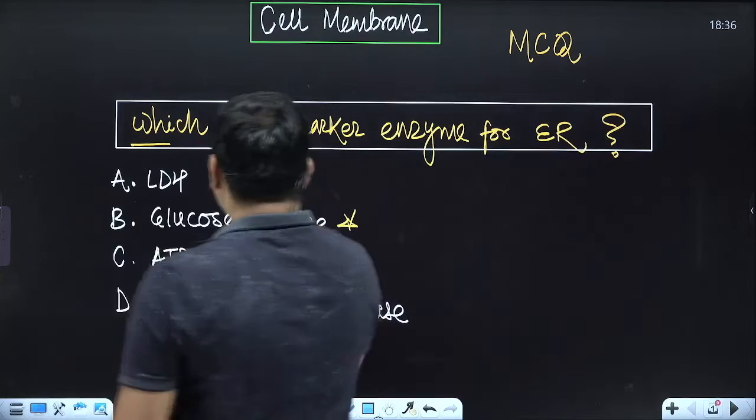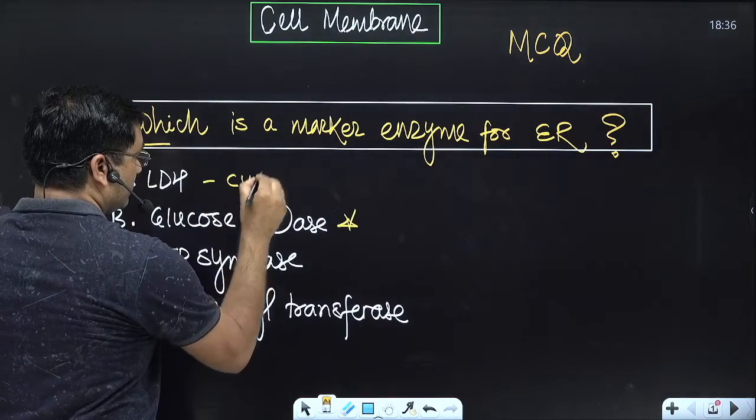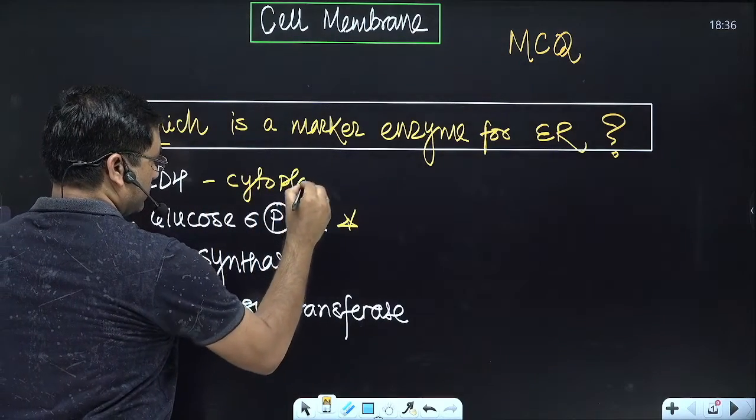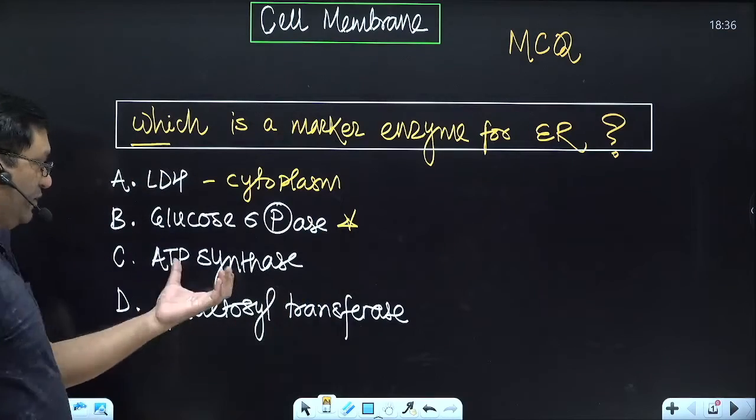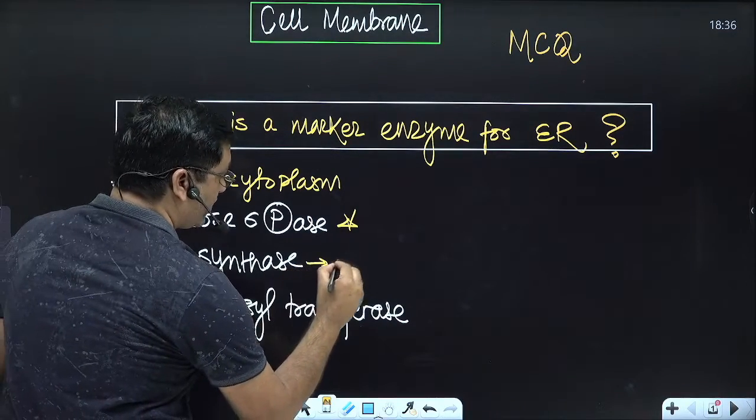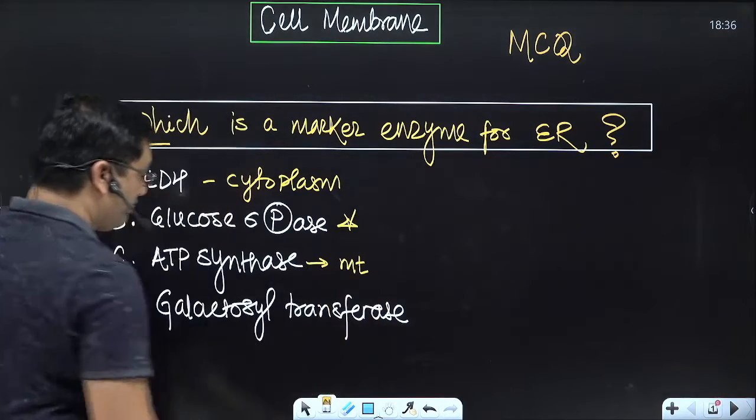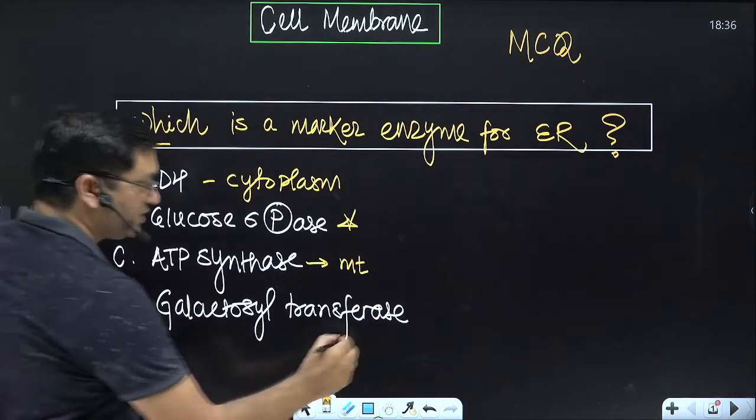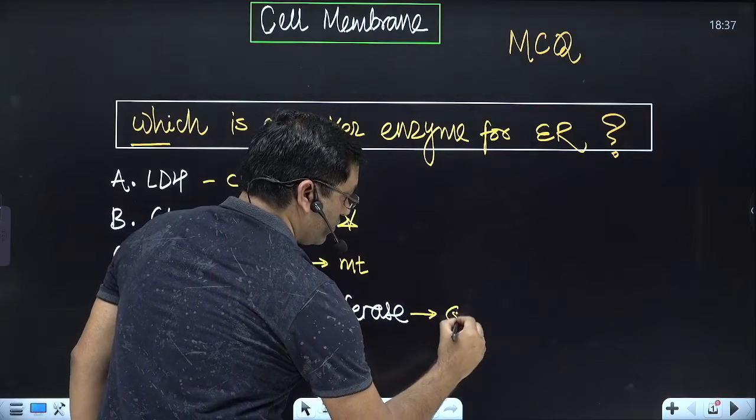LDH is the marker enzyme for cytoplasm. ATP synthase, it is for the mitochondrial membrane, that is inner mitochondrial membrane. Galactosyl transferase, it is for Golgi apparatus.